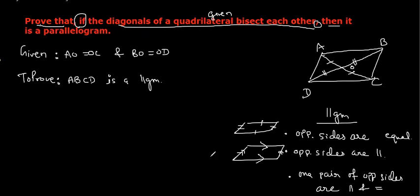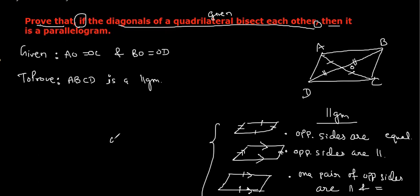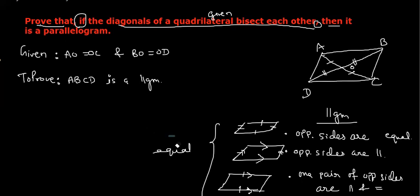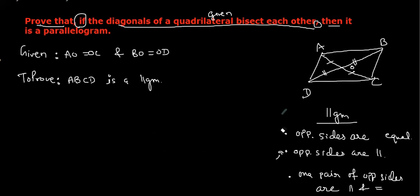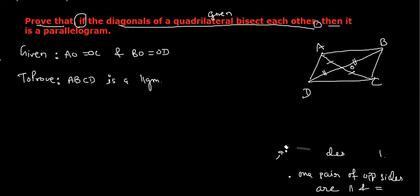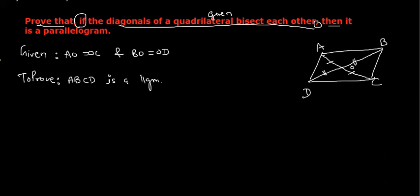In the last class, when I showed you the video, there must be this explanation. Either this side is equal and this side is parallel — prove this thing. Out of these three conditions, if you are able to prove any one, it will become a parallelogram. Or opposite angles are equal — if opposite angles are equal, then also it is a parallelogram. So there are many ways of proving it. You choose which one is possible. You are only allowed to use the given information and congruency.